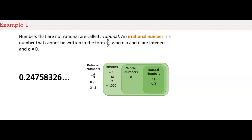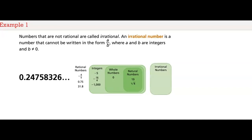Numbers that are not rational are called irrational. An irrational number is a number that cannot be written in the form a divided by b where a and b are integers and b is not zero. The number 0.24758326 and so on is irrational because the decimal expansion is non-repeating and non-terminating. Irrational numbers include non-repeating decimals, most positive and negative square roots and other roots, and special numbers such as pi.